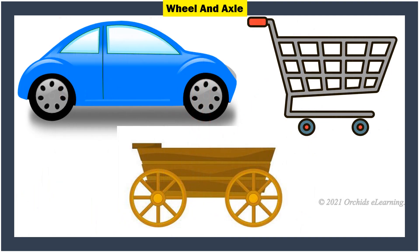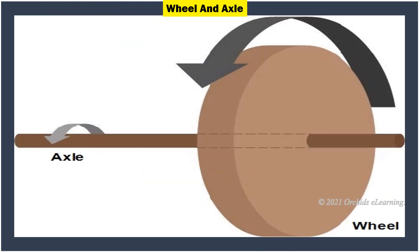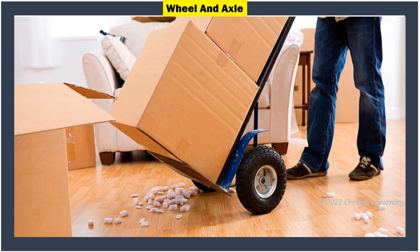Wheel and axle: Can you think of things that have wheels? Almost all vehicles have wheels. These wheels have a rod connected to them — this rod is called the axle. The axle moves the wheel. Moving heavy objects becomes easier with the help of a wheel and axle.